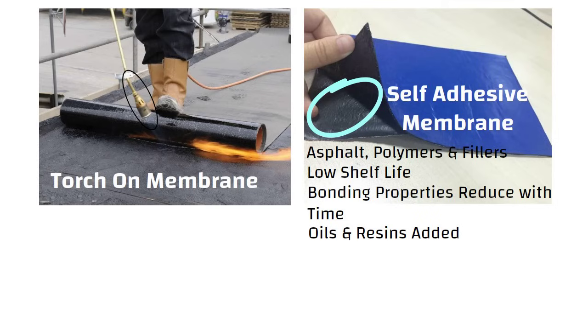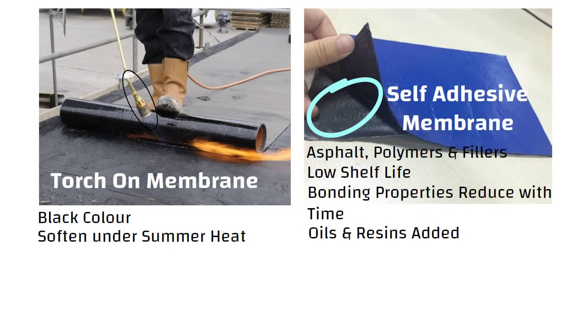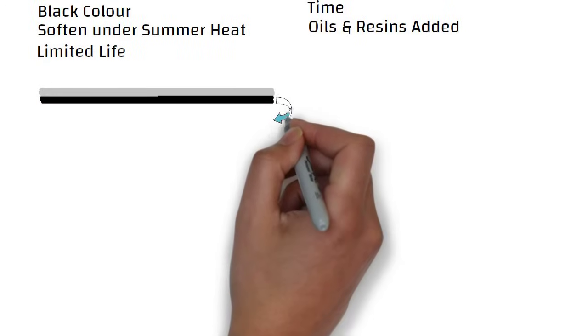Bitumen based products has a black color and they soften under summer heat. They have a limited life due to solvent evaporation. Generally, these types of waterproofing membranes are covered with screed concrete to prevent the puncture of the membrane.